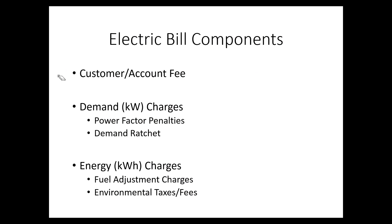Now we're going to talk about electric bill components. These are the things you'll find on most electric bills throughout the world. Basically, there are three main categories: the customer account fee, demand charges, and energy charges. We're going to hit each one of these individually.